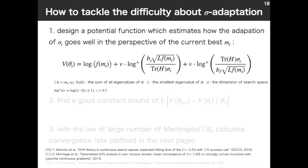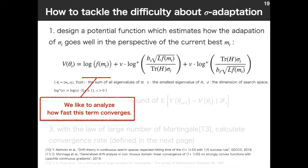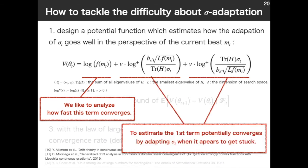This potential function b has three terms. The first term is log f(m_t), so we like to analyze how fast this term converges to the minimum. And the rest two terms is to estimate the first term potentially converges by adapting σ when it appears to get stuck, as we see in the previous. This log^+ is the logarithm assured it's not negative. In log^+, both in second and third term, it has σ_t. And it is compared to some values about current best m_t.